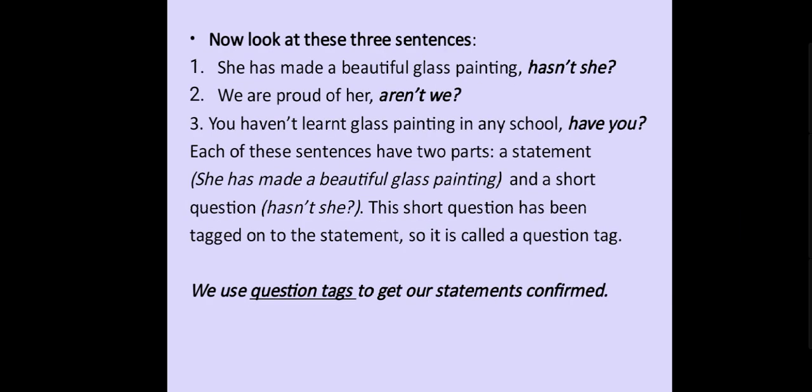Now look at these three sentences: 'She has made a beautiful glass painting, hasn't she?'; 'We are proud of her, aren't we?'; 'You have not learned glass painting in any school, have you?' Each of these sentences has two parts — a statement, such as 'She has made a beautiful glass painting', and a short question, 'hasn't she?' This short question has been tagged onto the statement, so it is called a question tag.